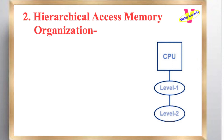Whenever the CPU requires any word, it first searches for the word in Level 1. If the required word is not found in Level 1, it searches for the word in Level 2. If the required word is not found in Level 2, it searches for the word in Level 3, and so on.